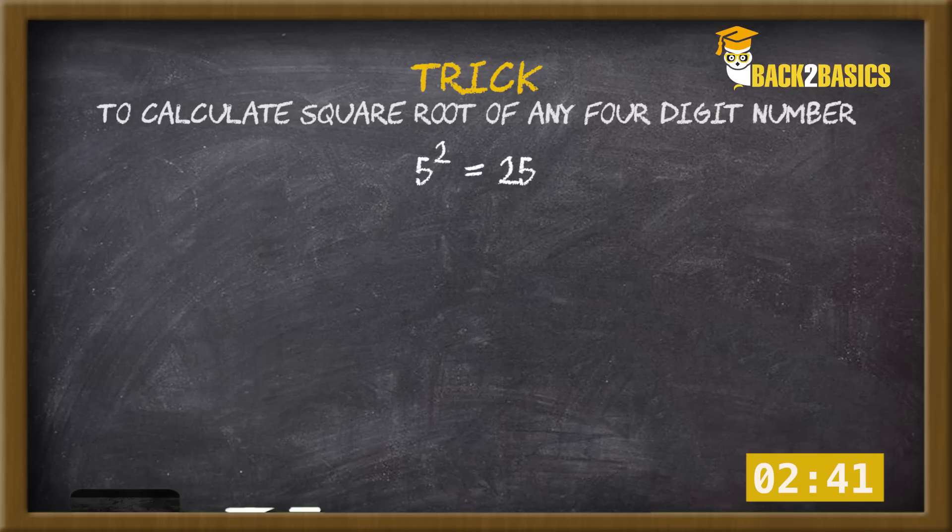5 square as we all know is 25. Next number ending with 5 is 15. So square of 15 can be calculated as 5 square equals 25, and 1 multiplied by the consecutive number 2 that gives us 225.